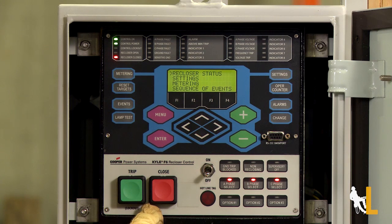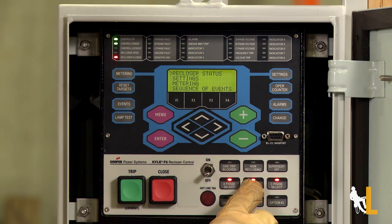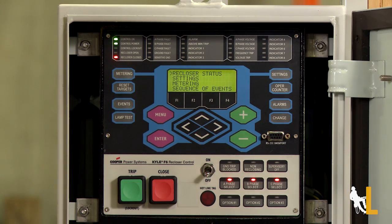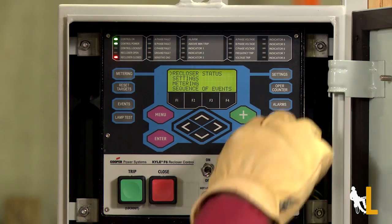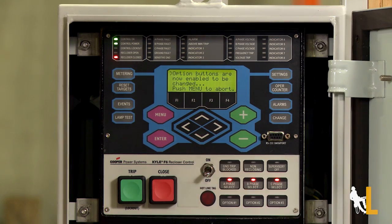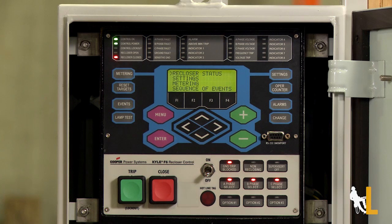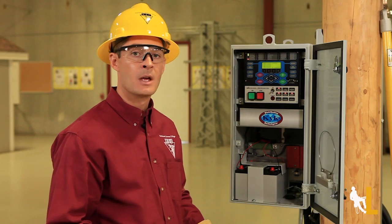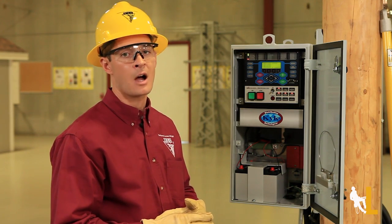These buttons are to open and close the device and over here are the quick access keys. To turn them on or off, first push the change button and then make your selection. Ground trip blocked will disable the ground sensing of the device. Non-reclosing will disable the automatic operation, but it will not change the response time. So if you're doing any hot work, still use the hotline tag.